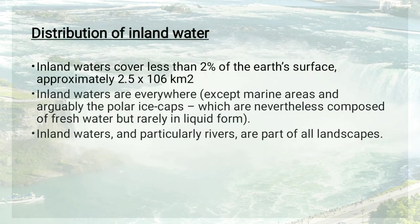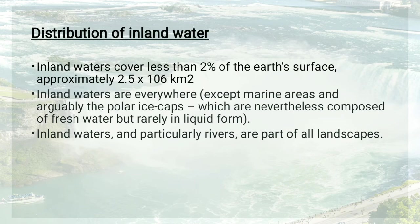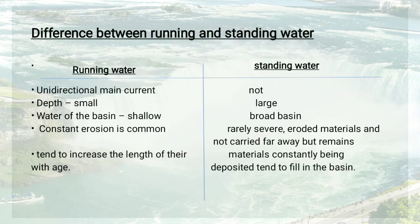Regarding the distribution of inland water: inland water covers less than 2% of the Earth's surface, approximately 2.5 × 10⁶ km². Inland water is found everywhere — fresh water, brackish water — except in marine areas and arguably the polar ice caps, which are composed of fresh water but rarely in liquid form. Rivers in particular are part of all landscapes.